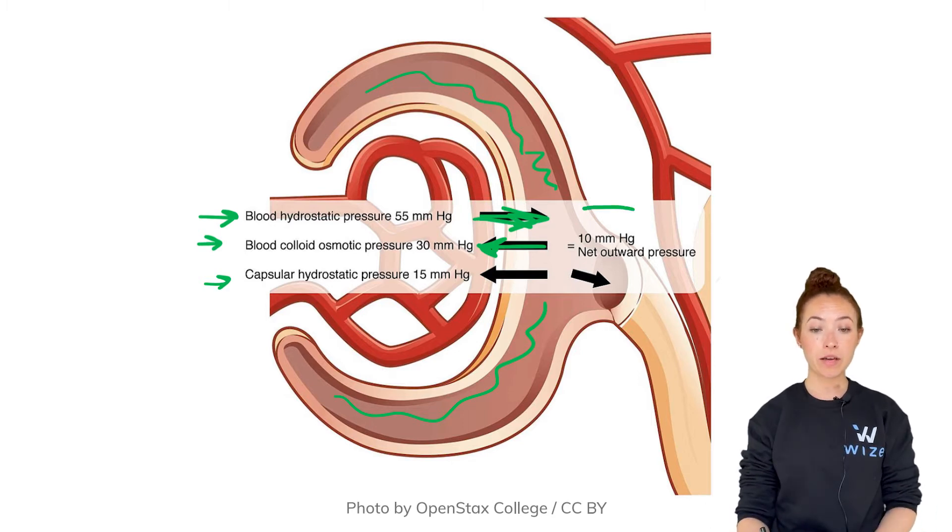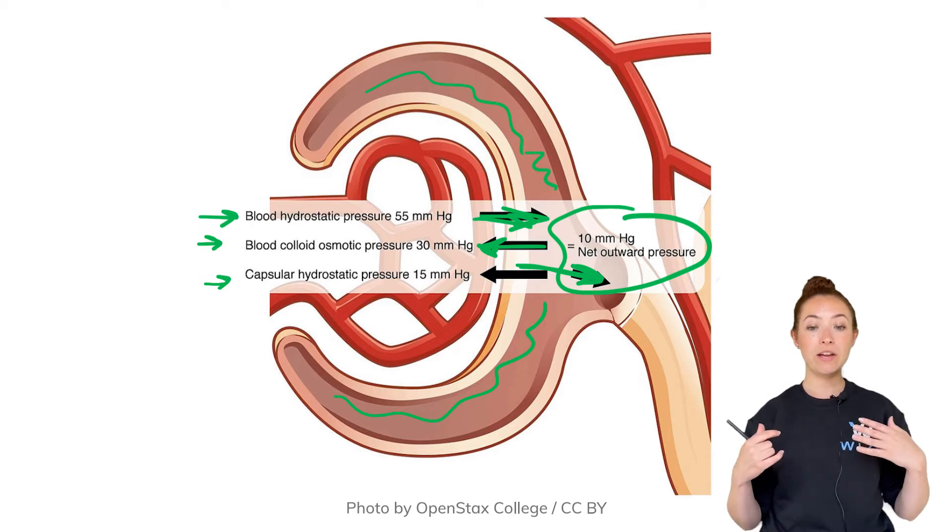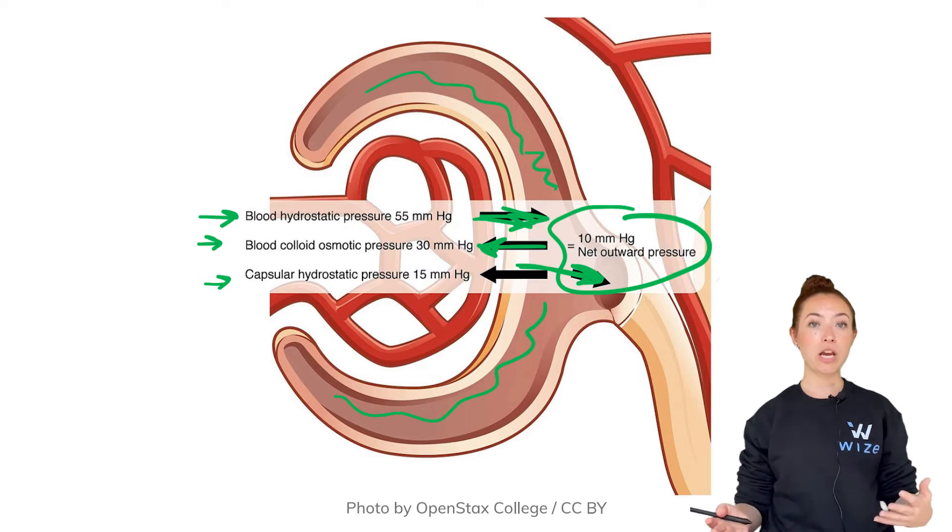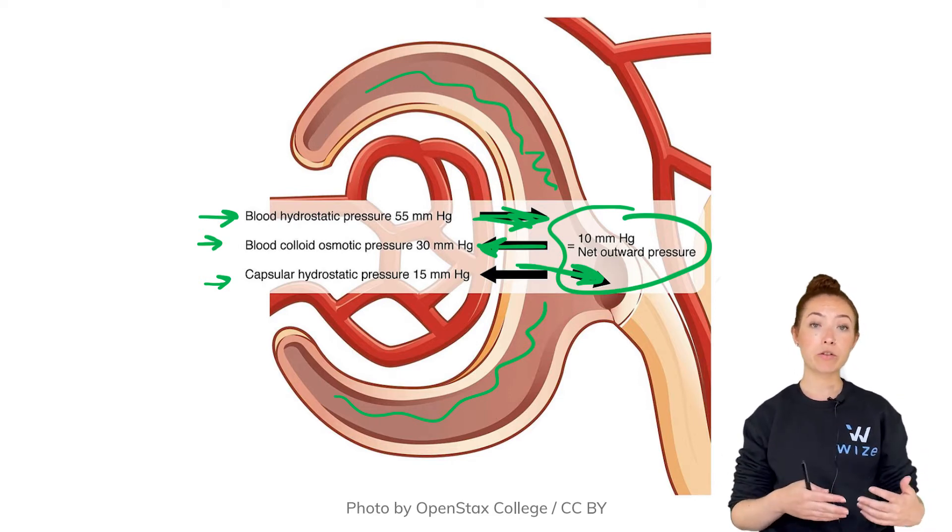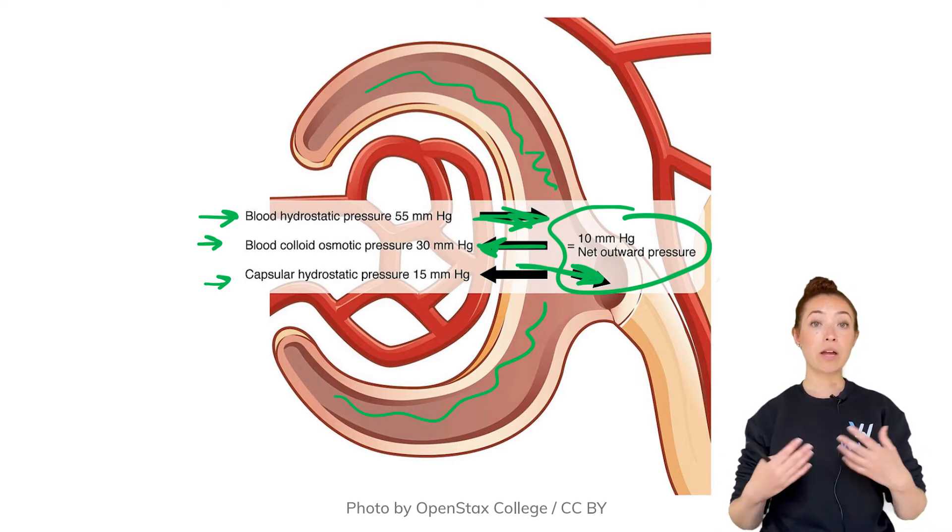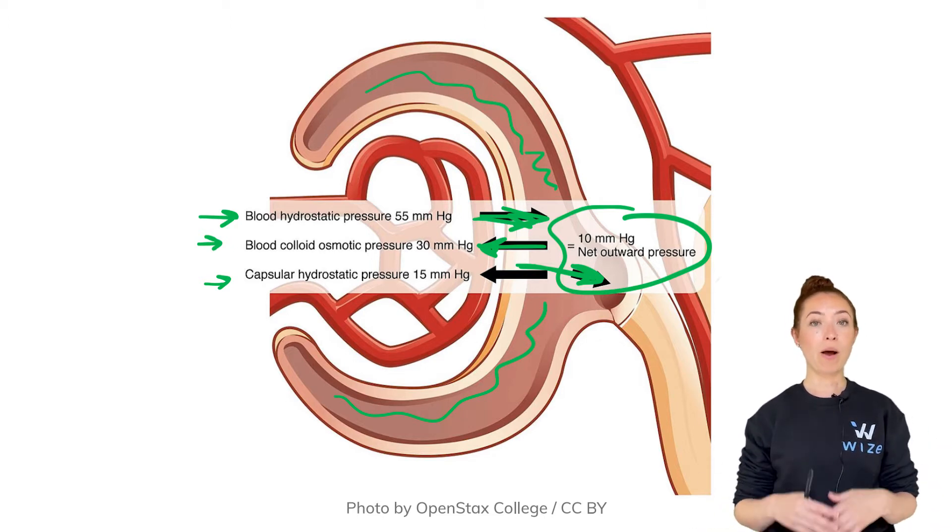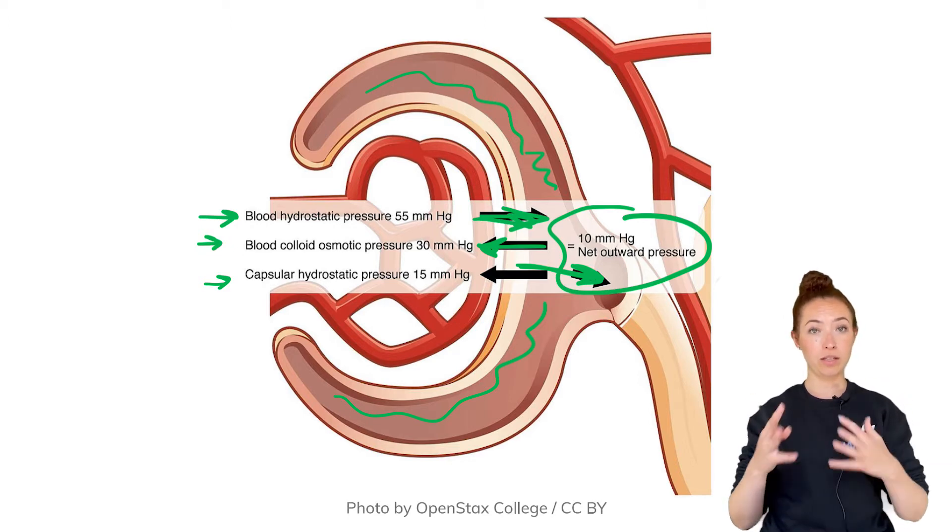The net pressure is typically such that there is still filtrate that is pushed out. So overall when we balance all those forces there is a net filtration of fluid from the capillaries and the glomeruli into Bowman's space. Now these values of these different forces can change based on blood volume. They can change based on how constricted the afferent or the efferent arteriole actually are, and so that can change the filtration rate which is essentially how much fluid per minute gets actually filtered from the capillaries into Bowman's space. But that's a topic for a different lesson. I just wanted to bring your attention to the things that can actually affect this process.